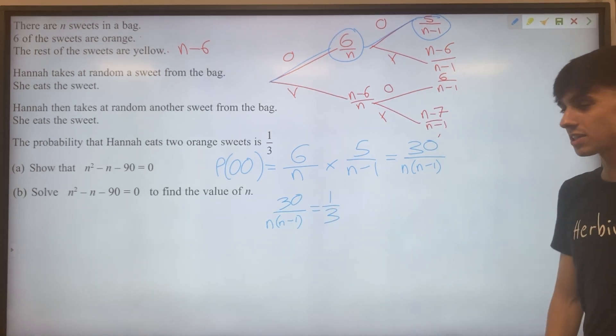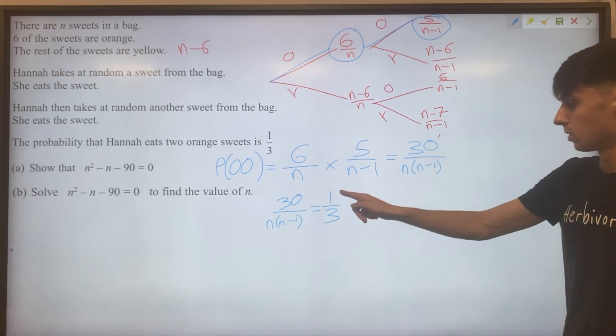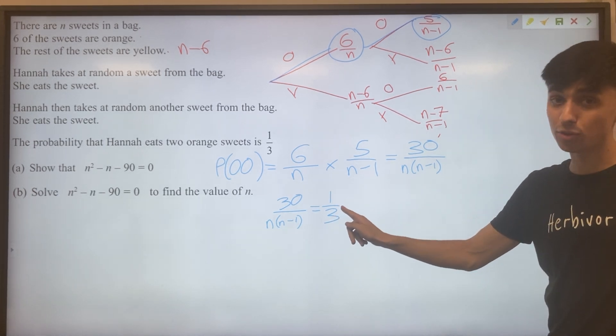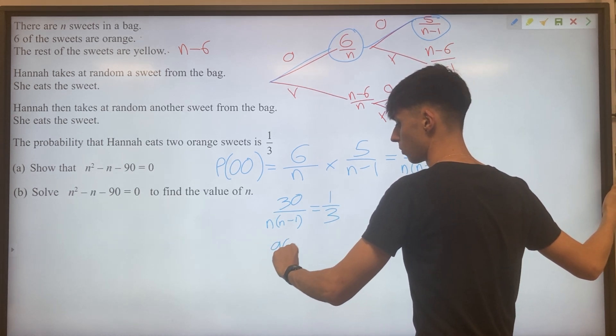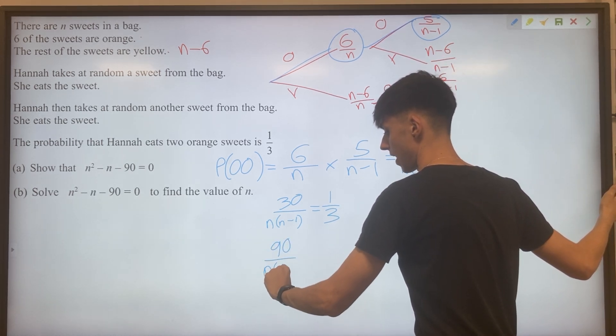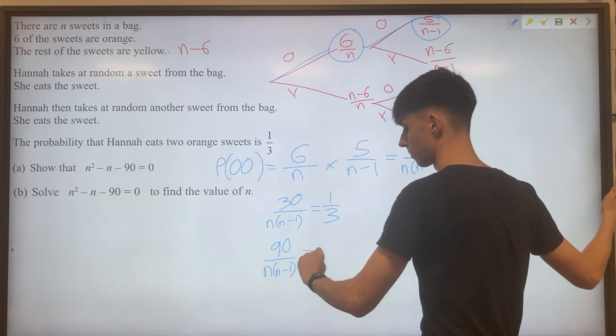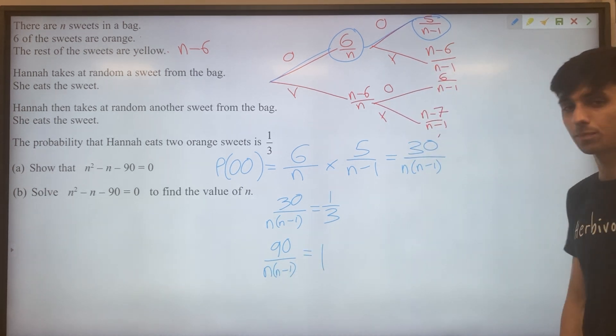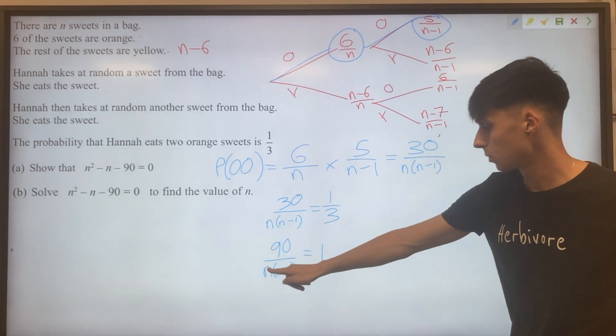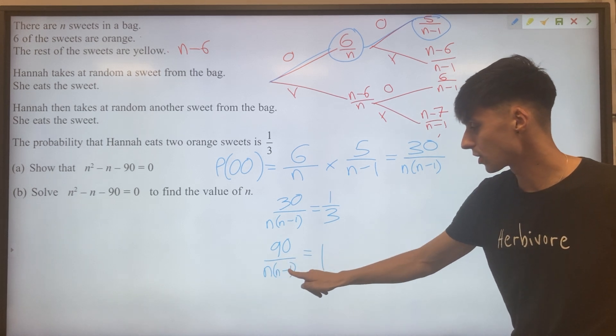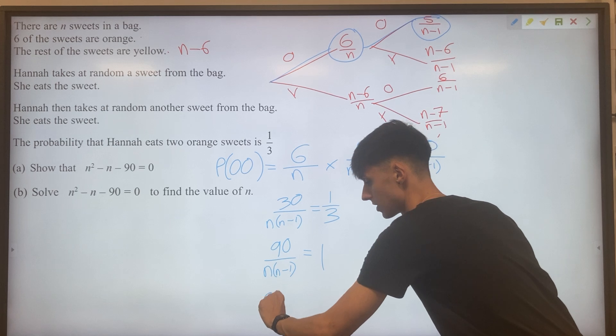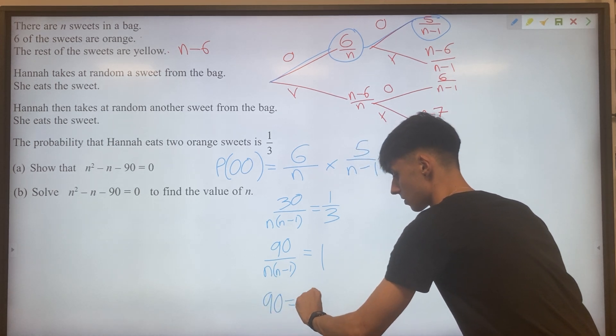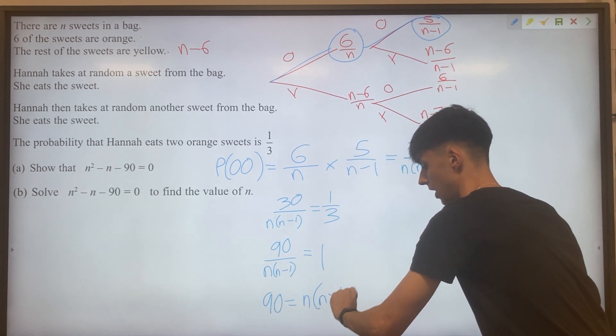We can say 30 over N, N minus one equals one third. And if we'd like to get rid of the fractions here, we can multiply everything by three first of all. Times both sides by three, we'll have 90 over N brackets N minus one. That would just give us one. And the last step would be multiplying our N, N minus one on both sides. We'll end up with having 90 equals N brackets N minus one.